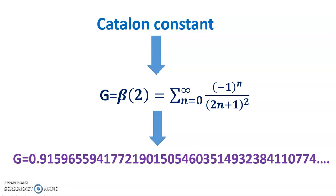G has been called arguably the most basic constant whose irrationality and transcendence are unknown. The Catalan constant was named after Eugène Charles Catalan, who found quickly converging series for its calculation and published a memoir on it in 1865.